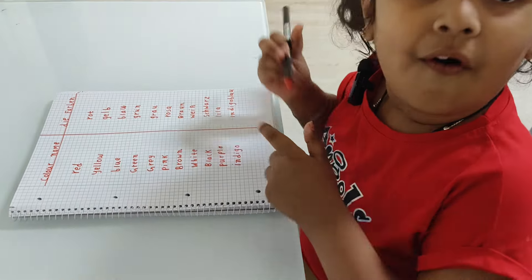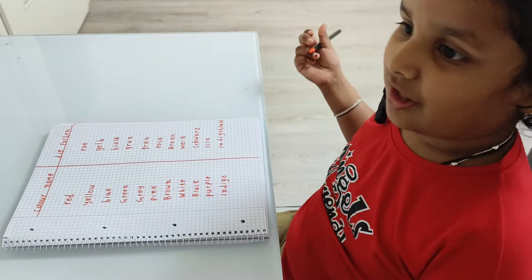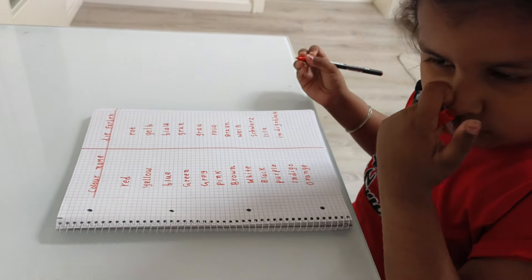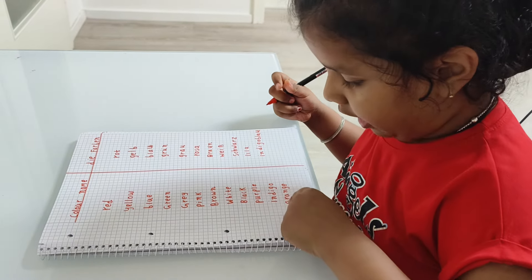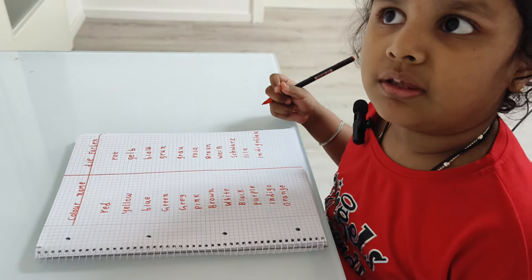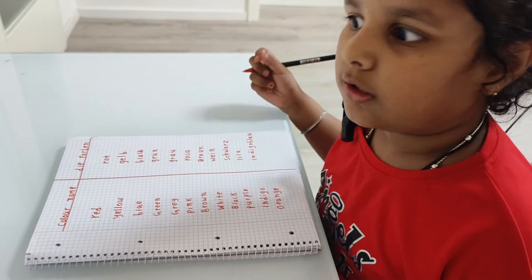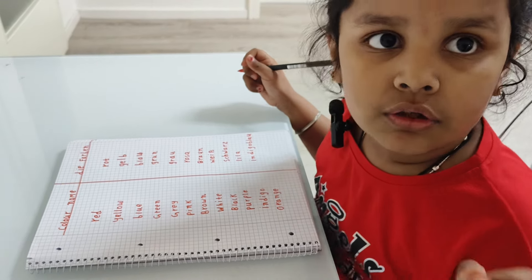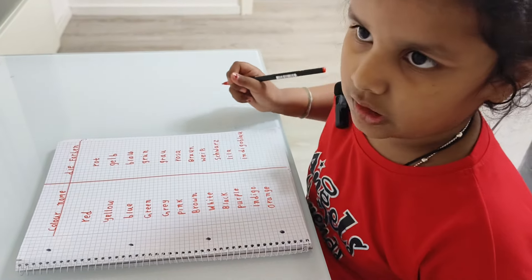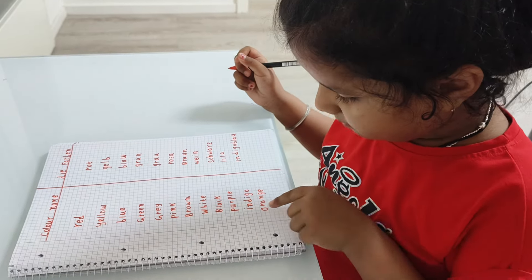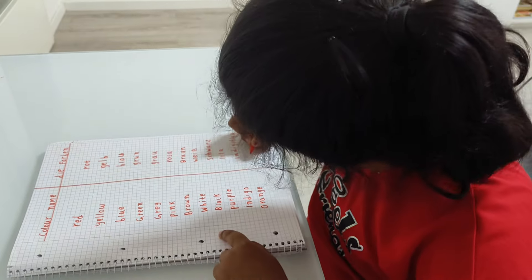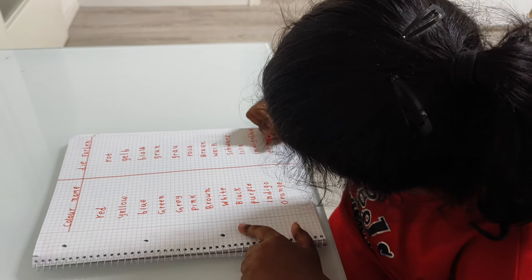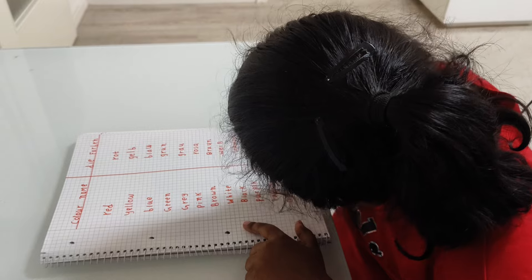Oh yeah, and orange! Orange — O, R, A, N, G, E. Now in German, it is the same spelling but a different pronunciation. You don't say 'German orange,' you just say 'Orange,' but with a different pronunciation. The letters are the same: O, R, A, N, G, E.